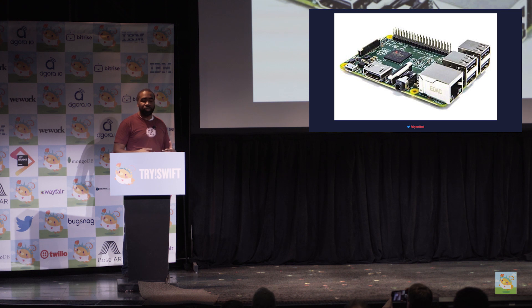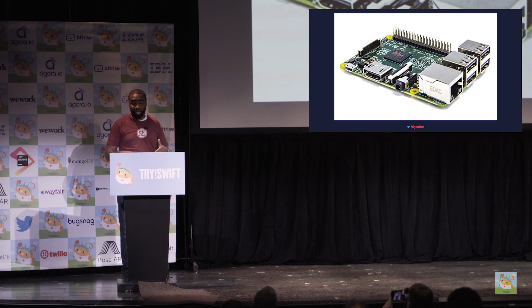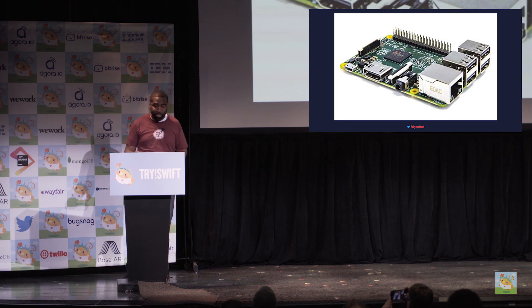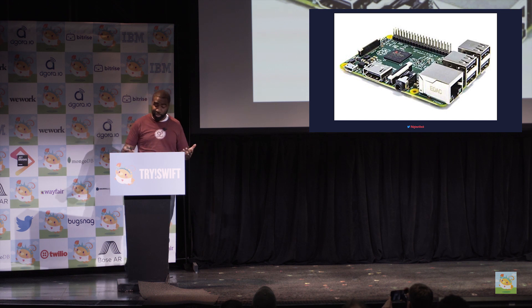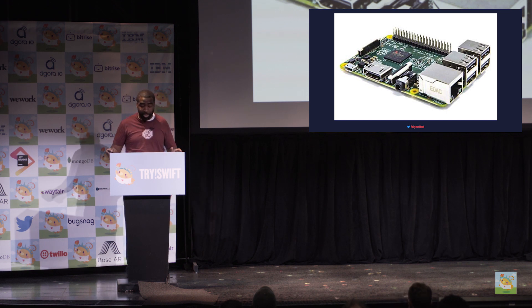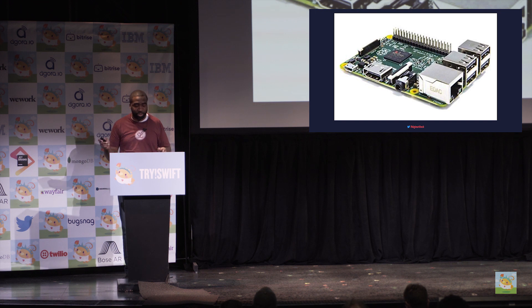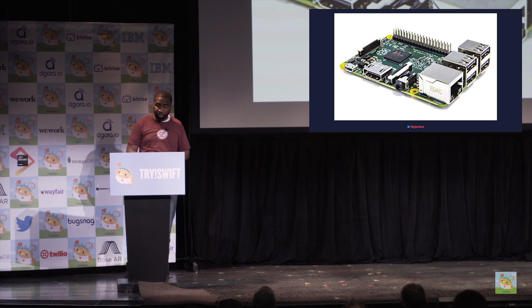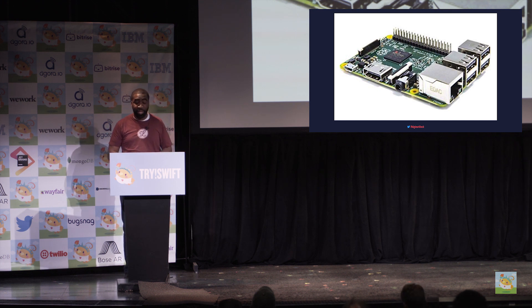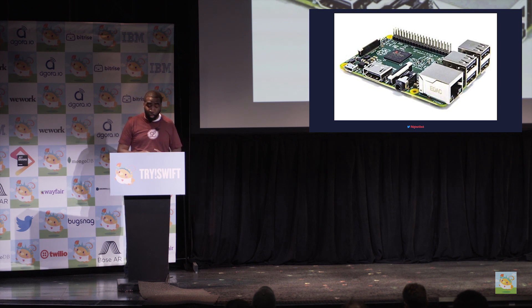A Raspberry Pi is a low-cost, credit card-sized computer that plugs into a monitor or TV and uses a standard keyboard and mouse. It is a capable little device that enables people of all ages to explore computing and learn how to program in languages like Scratch or Python. It's capable of doing everything you'd expect a desktop computer to do, from browsing the internet to playing high-definition video to making spreadsheets. The first Pi launched in 2012, and the latest model, Raspberry Pi 4, has a quad-core 1.5 GHz CPU with up to 4 GB of RAM.